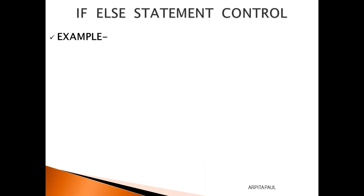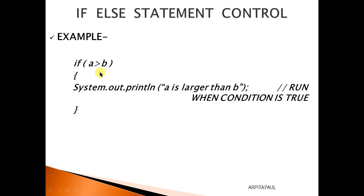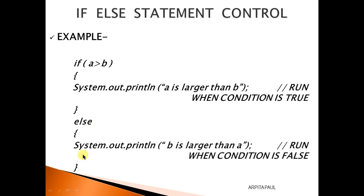In this example we will take two values and compare them to find the larger number. We write: if a is greater than b — checking if the value of a is greater than b or not. Here a and b are different variables with different values. If the condition is true, it will execute: System.out.println("a is larger than b"). If the condition is false — if a is less than b — it will go to the else part and execute: System.out.println("b is larger than a"). The statement printed is totally dependent on the condition.